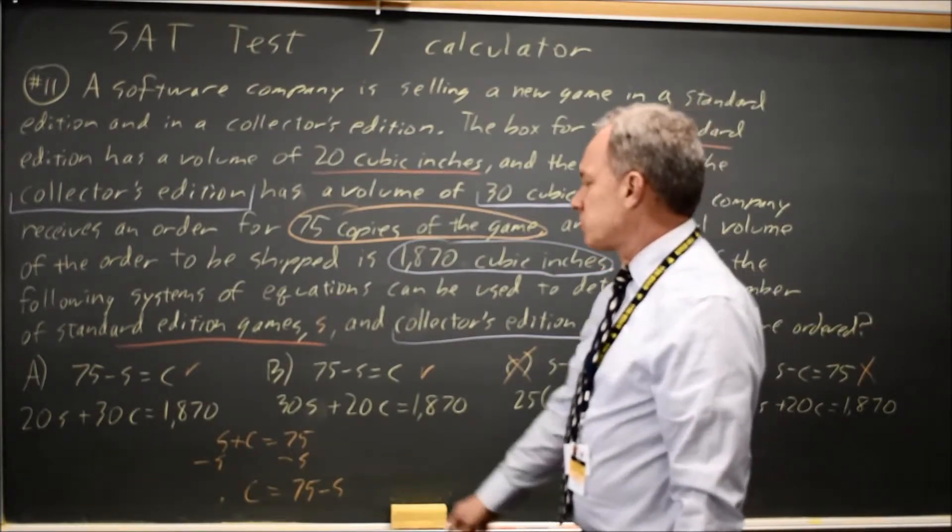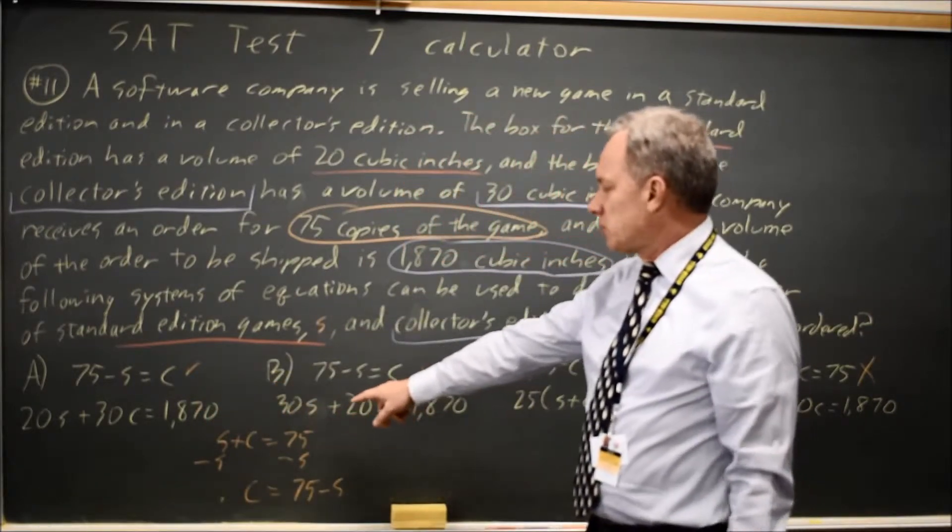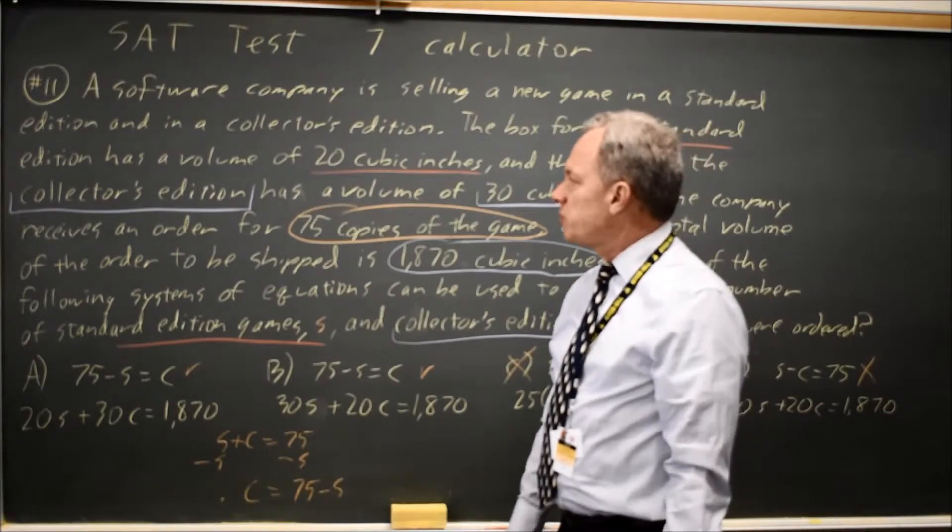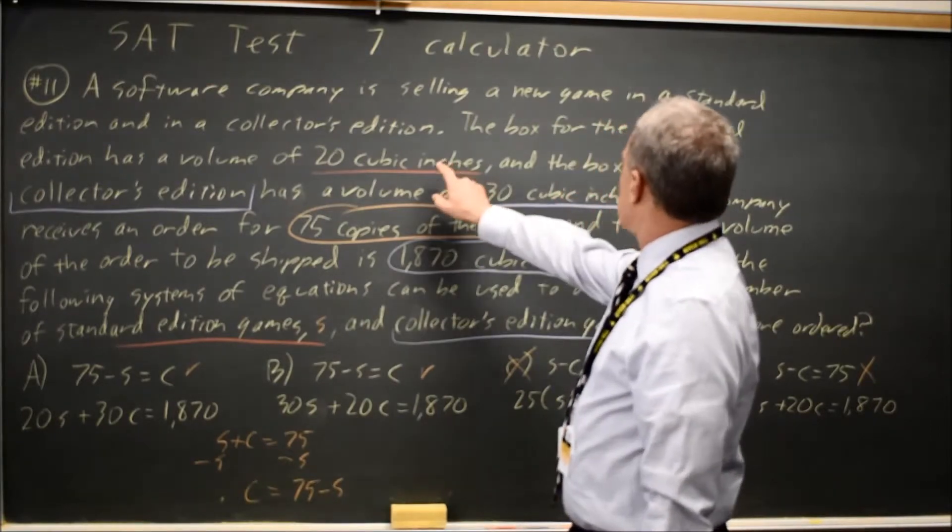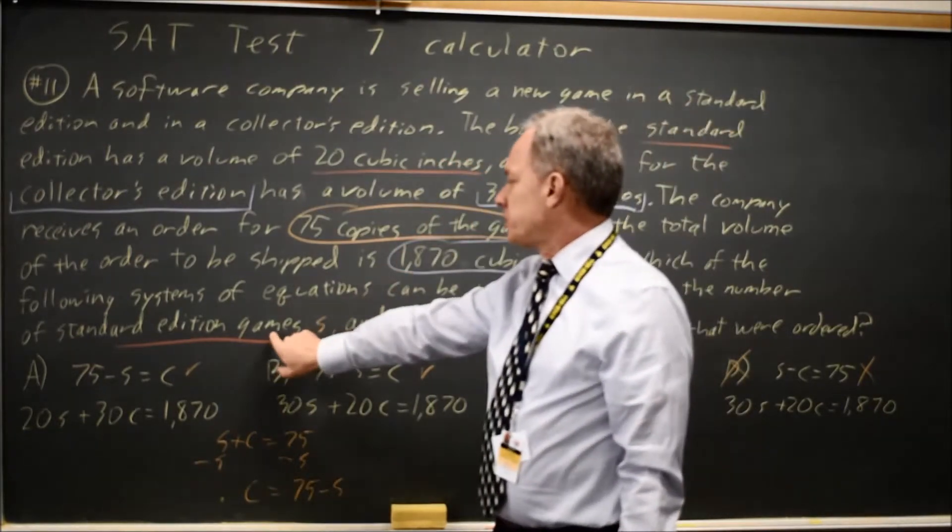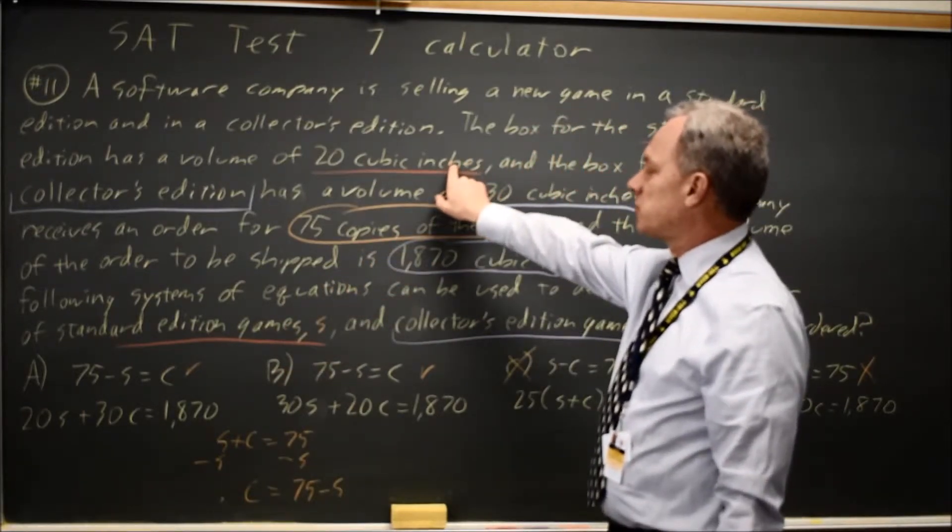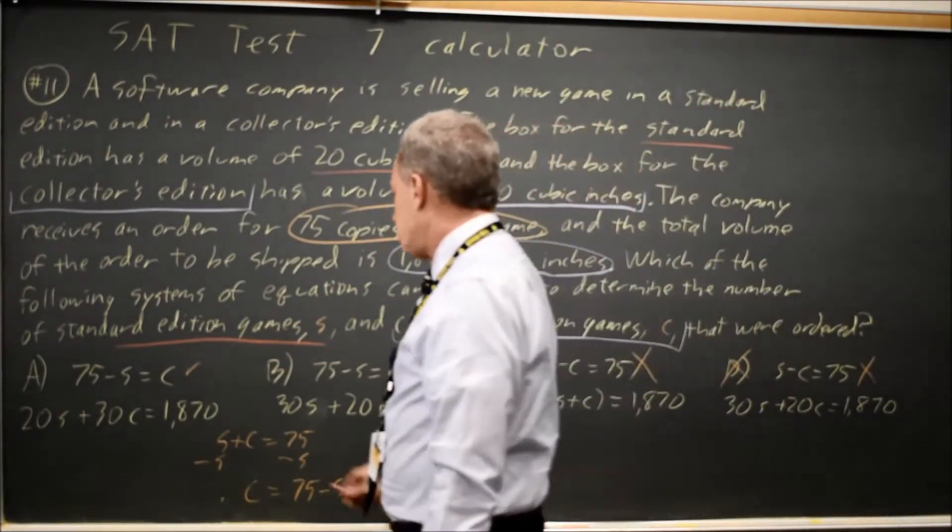Our choices are 20S plus 30C equals the total volume, or 30S plus 20C equals the total volume. These should be paired with the number of standard edition games times the volume of the standard edition, so that should be 20S, which is choice A.